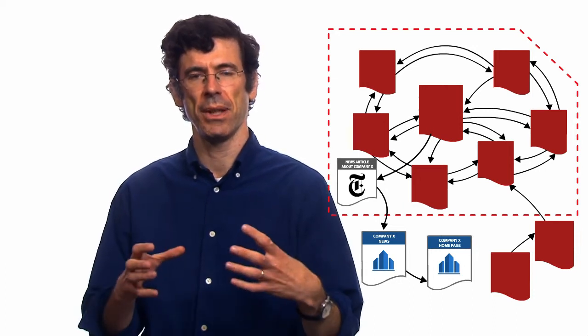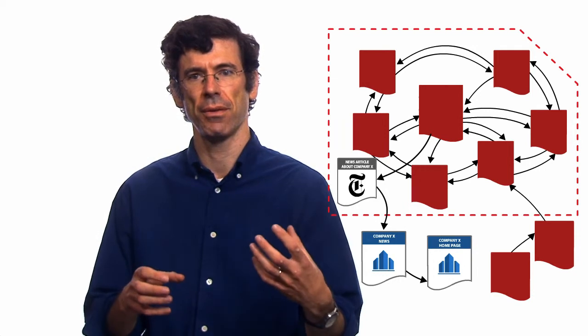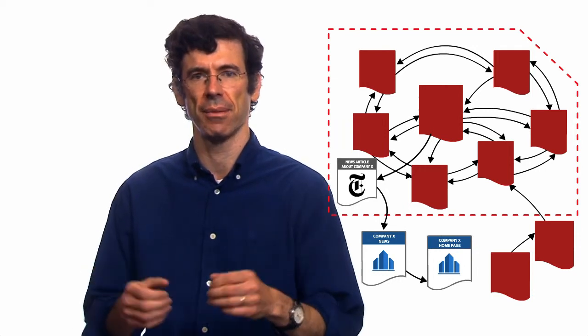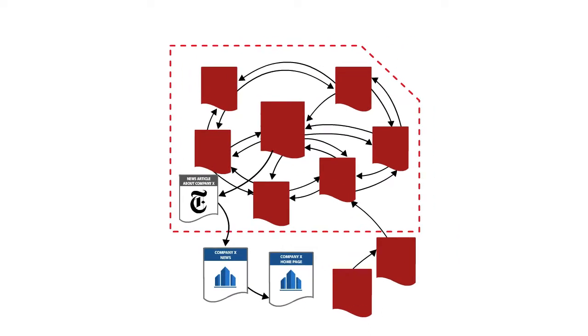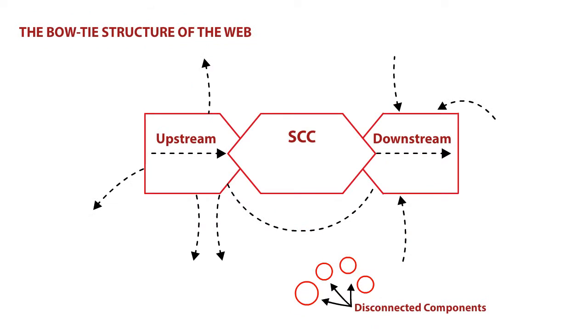It's this big piece in the middle, some upstream stuff, some downstream stuff, and then some stuff just hanging off to the side, unrelated to it. When researchers found this map, they called it the bow-tie picture of the web. I guess they were thinking about it as a bow-tie because there's this big knot in the middle, and then the upstream part and the downstream part sort of hang off the two sides, like the rest of the bow-tie outside the knot. Depending on how you draw it, it looks like anything that has this big central piece and then stuff hanging off the edges.